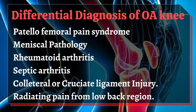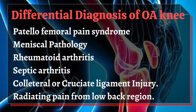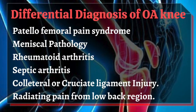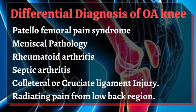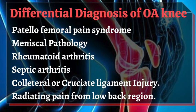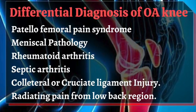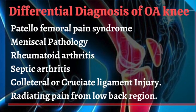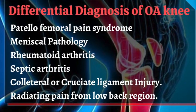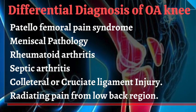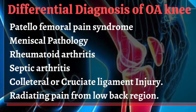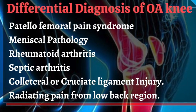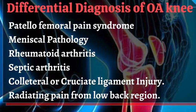Following the whole assessment, you will need to write a possible differential diagnosis for knee osteoarthritis, which might include patellofemoral pain syndrome, meniscal pathology, rheumatoid arthritis, septic arthritis, collateral or cruciate ligament injury, and radiating pain from the low back region. After analyzing the assessment and performing special tests, you arrive at the provisional diagnosis.